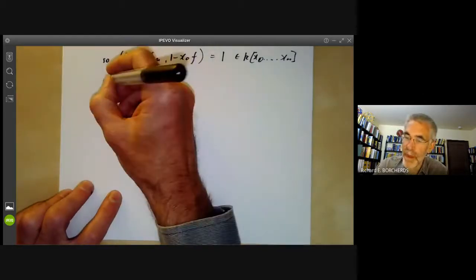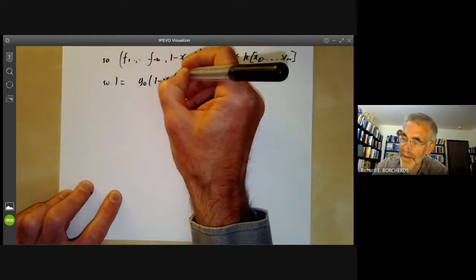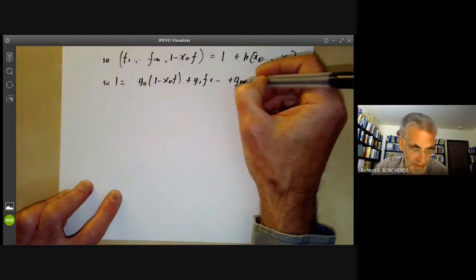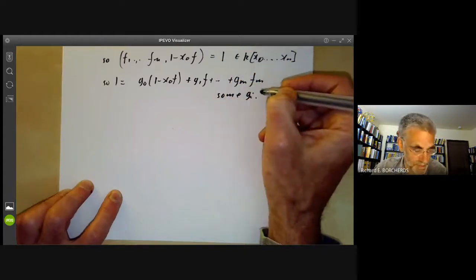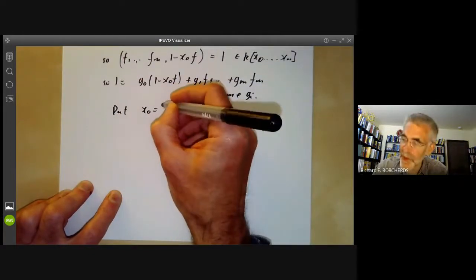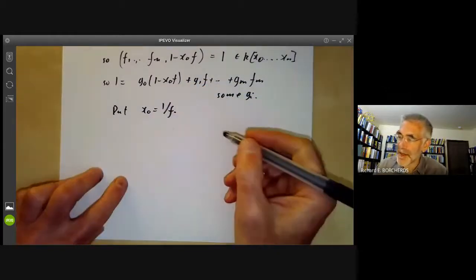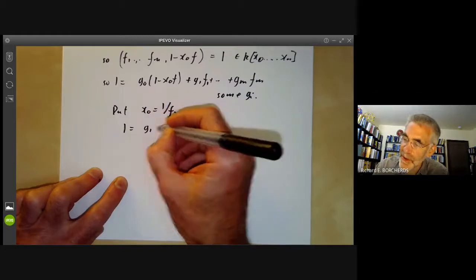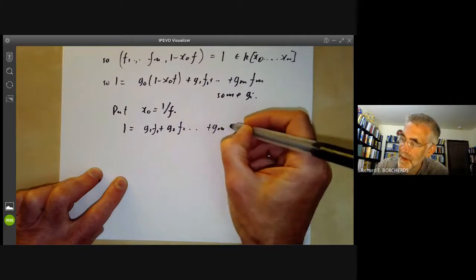1 in k[x0, x1,...,xn], because we've added this extra variable. So 1 is equal to g0·(1 - x0·f) plus g1·f1 plus... plus gm·fm for some gi. Now put x0 equals 1/f. So we're now working in a ring of rational functions.